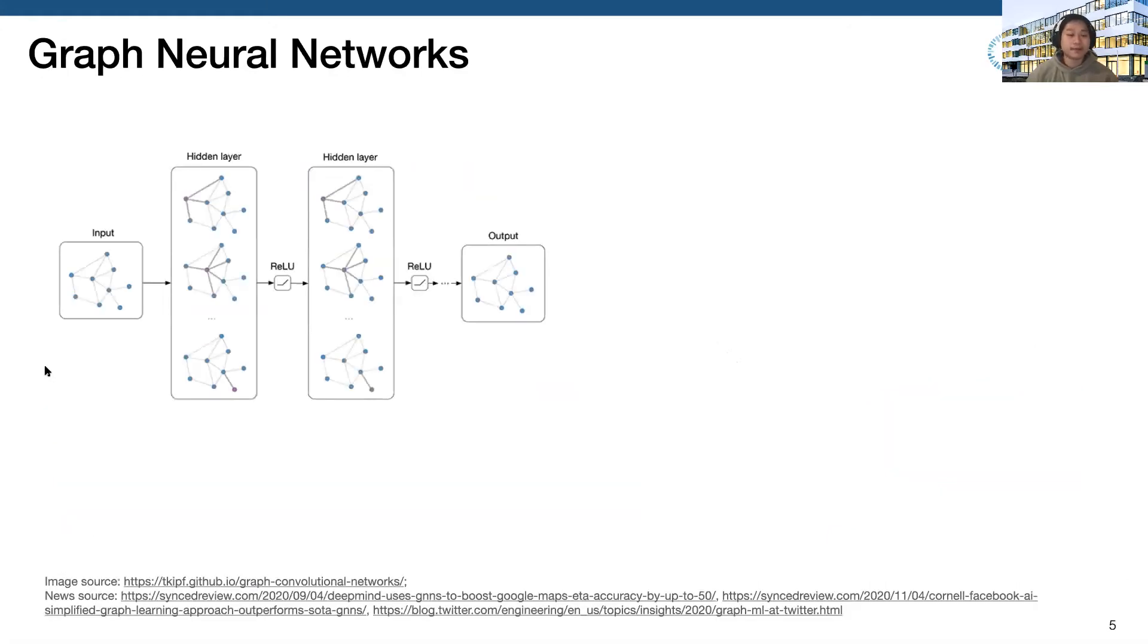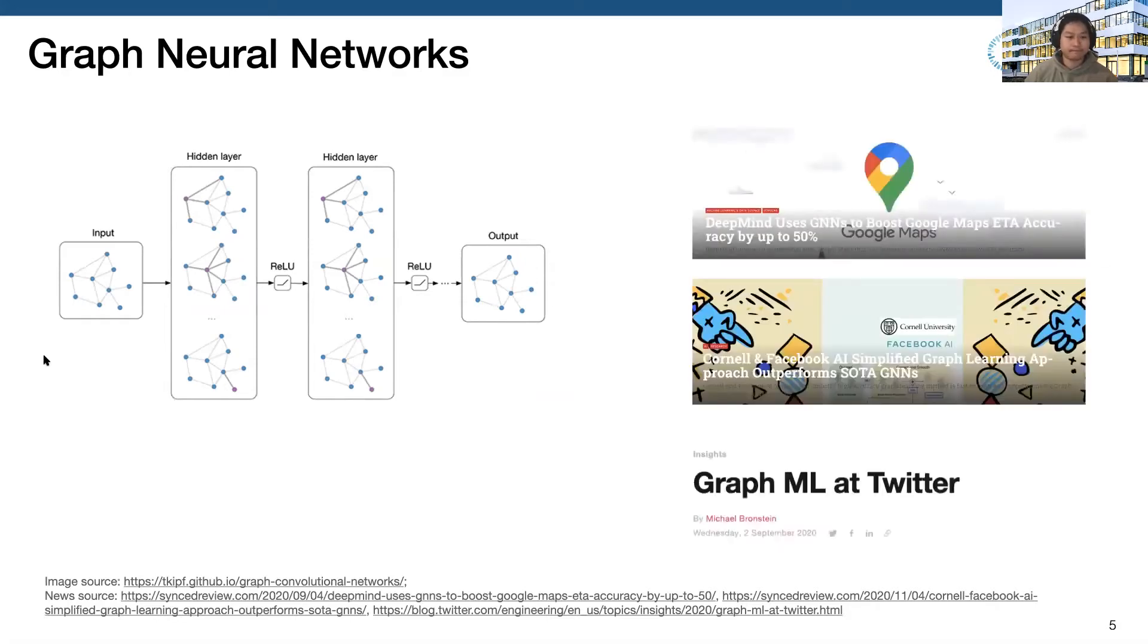To fully understand graph data, a new type of network has been created, called graph neural network. Graph neural networks show great promise in handling graph data and have been deployed in many real-world applications by big companies like Google, Facebook, and Twitter. Since graph data is the most valuable information in GNN, the security and privacy of the graph need to be taken into account.